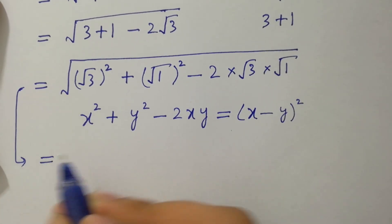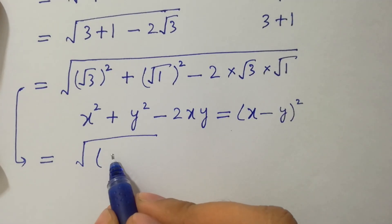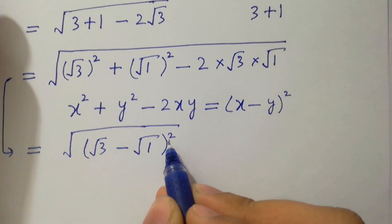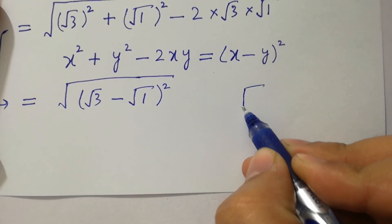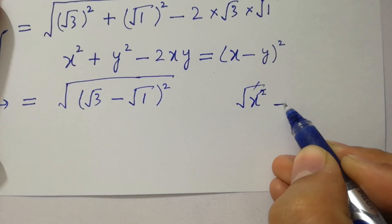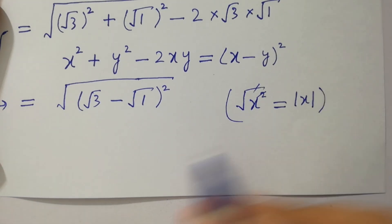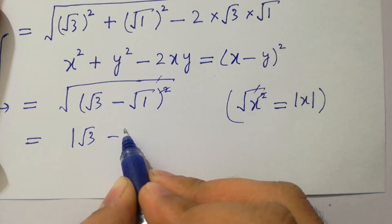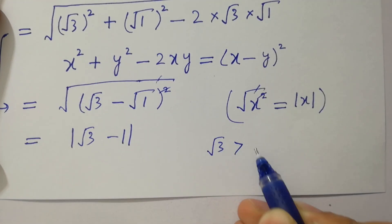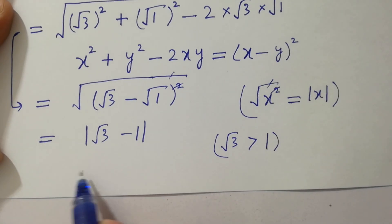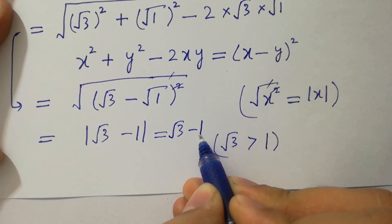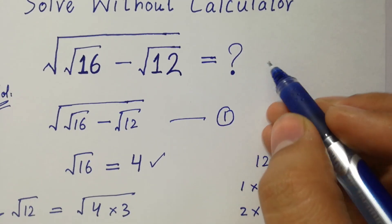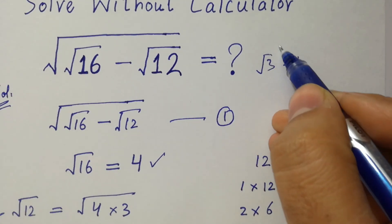Then it becomes the whole square root of (√3 − √1)². Since square root of x² equals the absolute value of x, the square cancels with the square root, giving |√3 − 1|. Since √3 is greater than 1, this equals √3 − 1, which is our final answer.